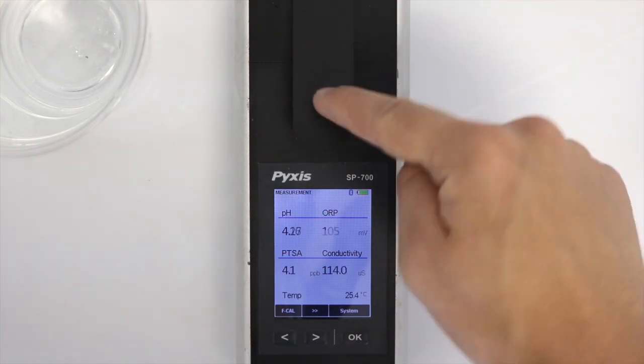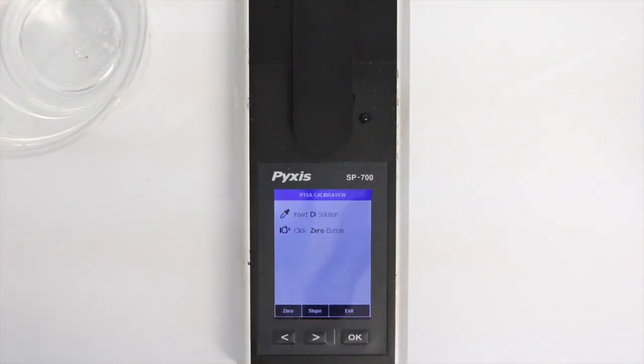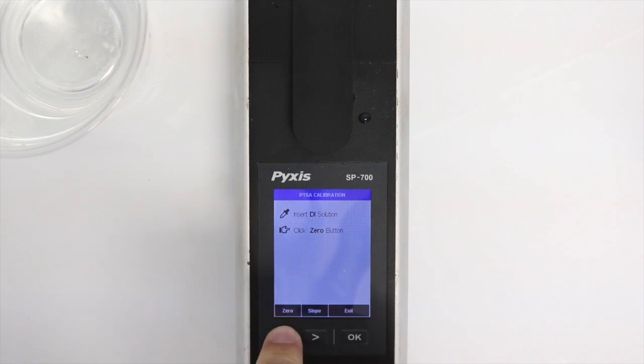Close the shield and select FCAL by pressing the left arrow key. Press the left arrow key to select zero.